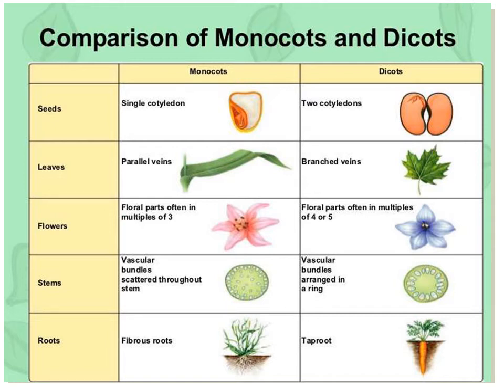Looking at stems: in monocots, vascular bundles are scattered throughout the stem, but in dicot plants the vascular bundles are arranged in a ring. For roots: in monocots, roots are fibrous, while in dicots roots are tap roots. You need to pull out the plant to see the roots.